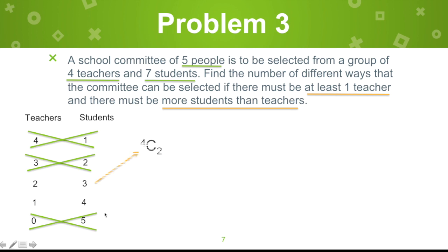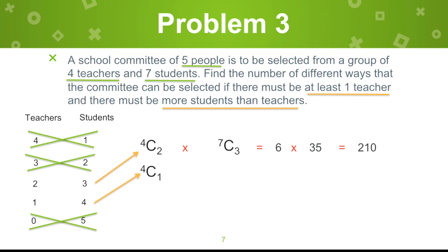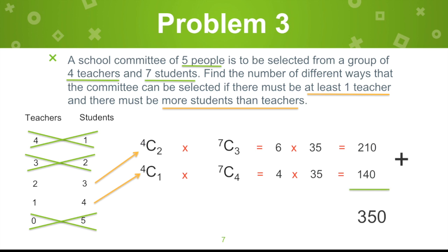So we are left with 2 possibilities. Selecting 2 teachers from 4 is combination of 4 taken 2, and selecting 3 students from 7 is combination of 7 taken 3 — multiply to get 210. The second possibility is selecting 1 teacher from 4, combination of 4 taken 1, and 4 students from 7, combination of 7 taken 4 — giving 4 times 35 equals 140. Adding both gives 350 committees of 5 people where there is at least 1 teacher and more students than teachers.